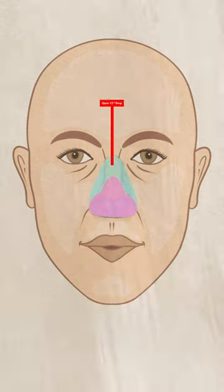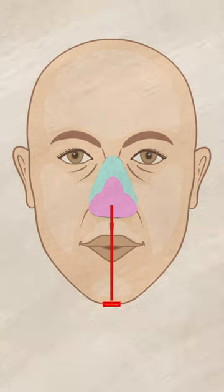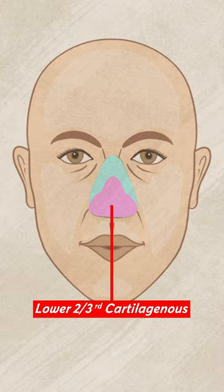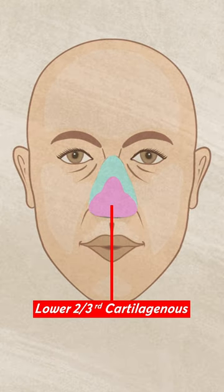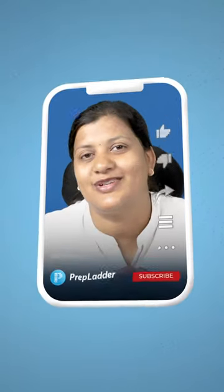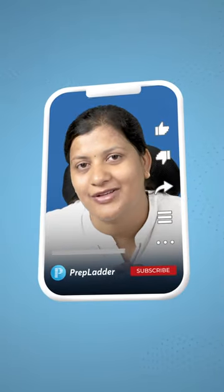The bony part is the upper one third and the cartilaginous part is the lower two thirds. This forms the basics of understanding the external nose anatomy. I hope this information is understood very easily by all of you, and I am hoping that most of you will be able to retain this information.